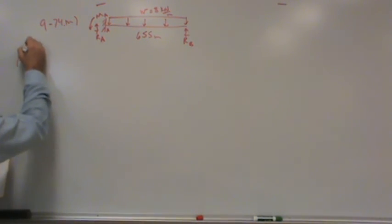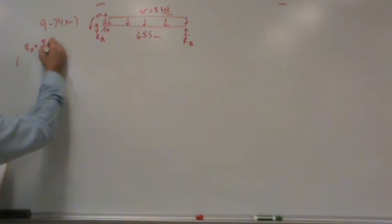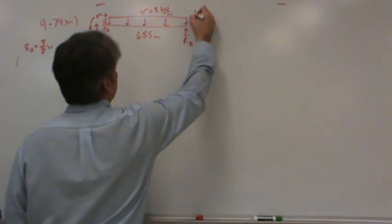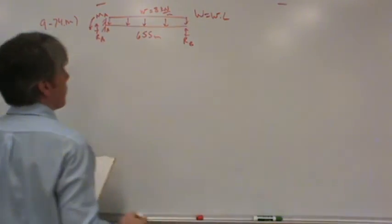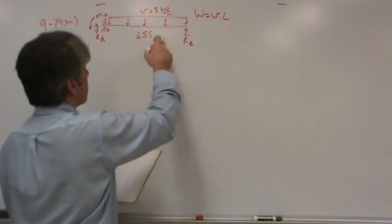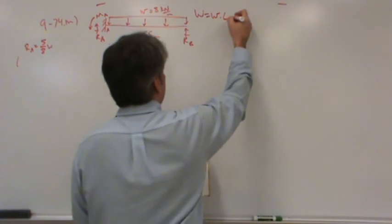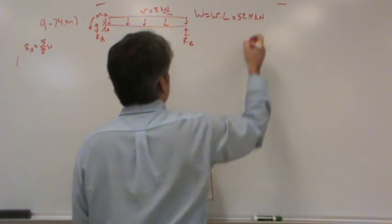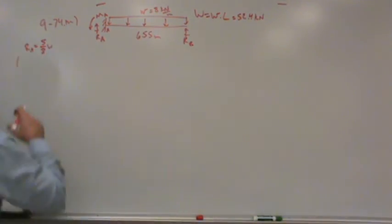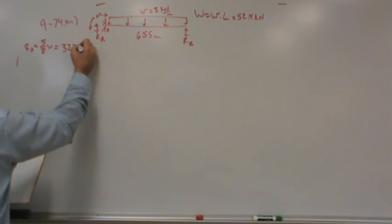The reactions are pretty straightforward. The reaction at A, according to our solution here, is 5/8 of W, where W is the load per meter times the length of the beam. When you multiply that out, 8 kilonewtons per meter times 6.55 meters, you get a total load of 52.4 kilonewtons. So when you multiply that by 5/8, then you get the reaction at A, and that is 32.75 kilonewtons.